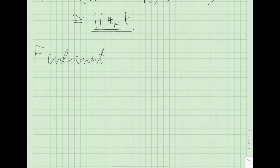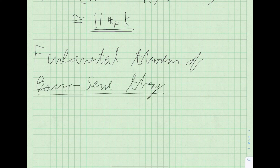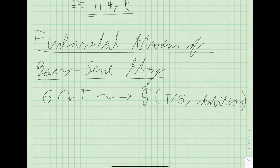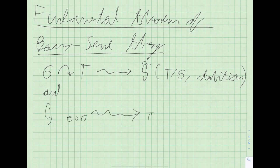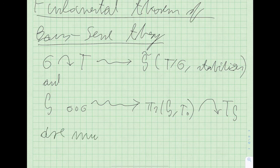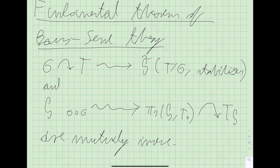Let me end by quickly stating the fundamental theorem of Bass-Serre theory. It says: starting with a group acting without inversions on a tree, you go to the graph of groups consisting of the quotient graph and stabilizers. Conversely, from a graph of groups you find the fundamental group, and — though I skipped this — there is a canonical Bass-Serre tree. The fundamental theorem says that these two operations are mutually inverse, so that groups acting on trees correspond precisely to graphs of groups.